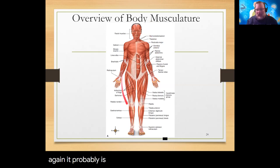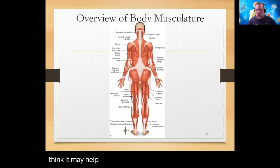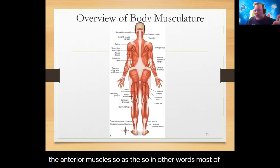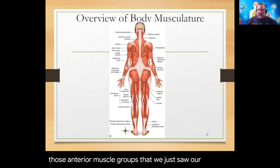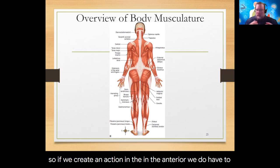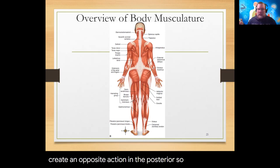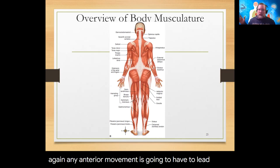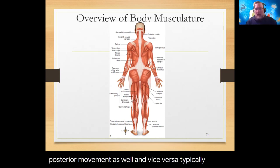Posterior muscles produce the opposite actions of anterior muscles. Most anterior muscle groups have antagonist muscles in the posterior region. If we create an action anteriorly, we have to create an opposite action posteriorly. These muscles are just moving bones at joints — any anterior movement will lead to posterior movement as well, and vice versa. These are prime movers and antagonists.